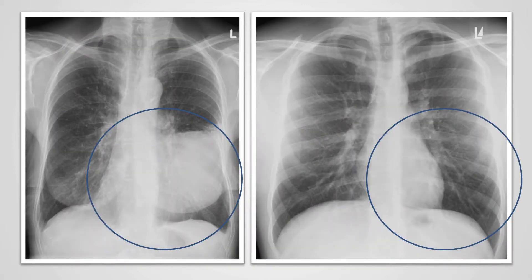Here we have an example of a silhouette sign. On the right, we can identify the heart centrally. We can see the right heart border and the left heart border clearly. On the left hand image, we can see the right heart border, but we cannot identify the left heart border.